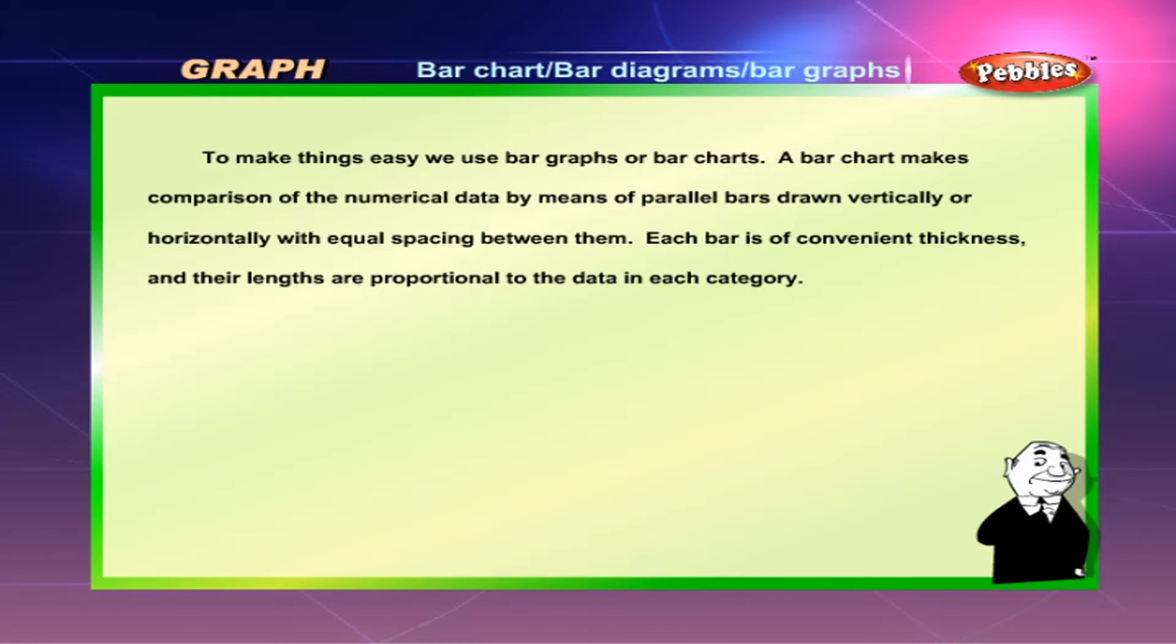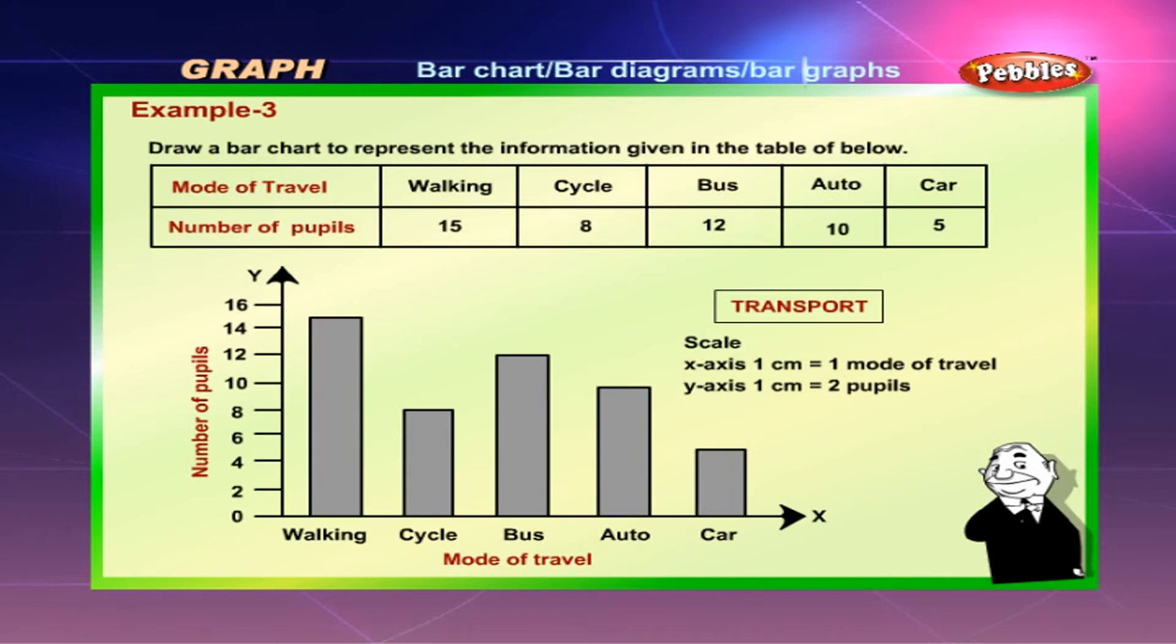Bar chart, bar diagrams, or bar graphs: To make things easy we use bar graphs or bar charts. A bar chart makes comparison of the numerical data by means of parallel bars drawn vertically or horizontally with equal spacing between them. Each bar is of convenient thickness and their lengths are proportional to the data in each category.